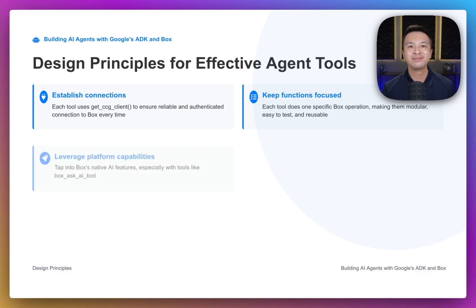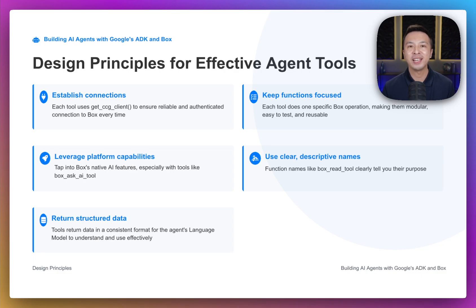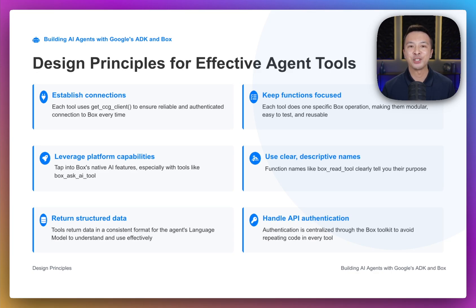And reusable. Third, leverage platform capabilities — we're tapping into Box's native AI features, especially with tools like Box Ask AI Tool. Fourth, use clear descriptive names — the function names, like Box Read Tool or Box Who Am I Tool, clearly tell you their purpose. Fifth, return structured data — our tools return data in a consistent format, making it easier for the agent's language model to understand and use the results effectively. And lastly, handle API authentication — authentication is centralized through the Box Toolkit, so we don't need to repeat authentication in every single tool.